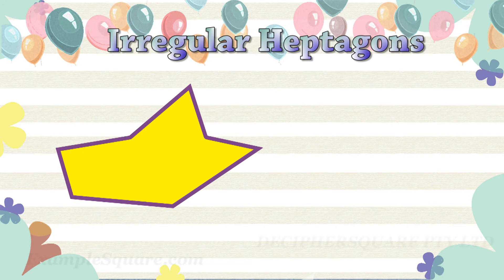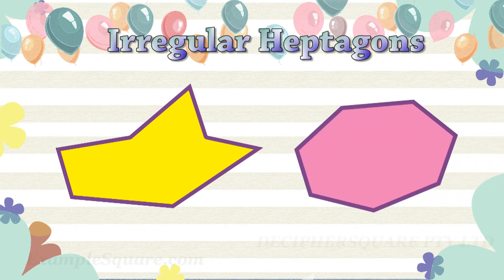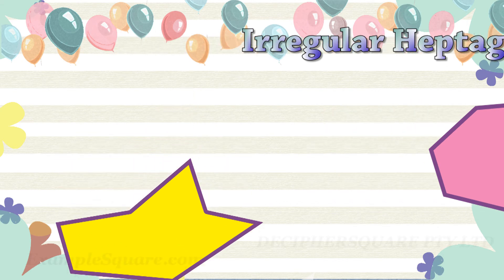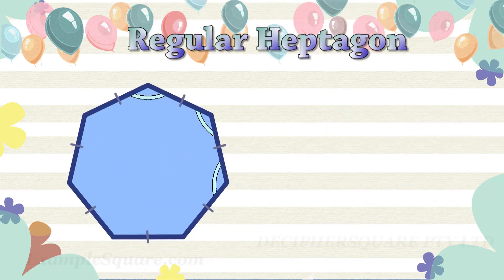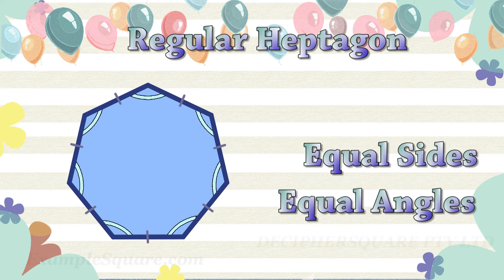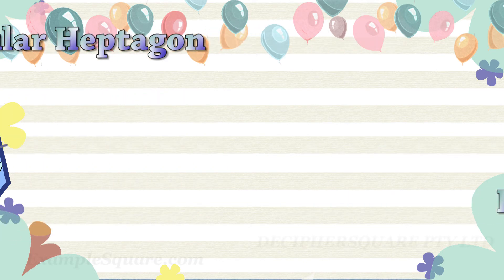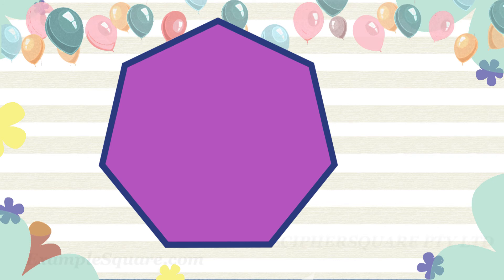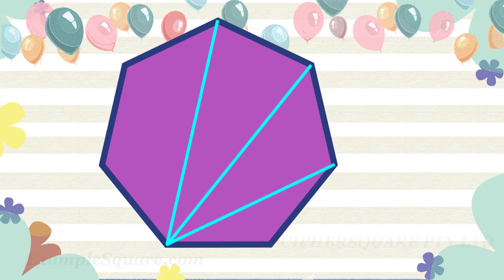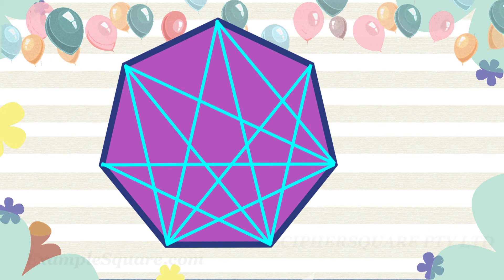These are some examples of an irregular heptagon. This is a regular heptagon. A diagonal is a line connecting two non-adjacent vertices. A heptagon has 14 diagonals.